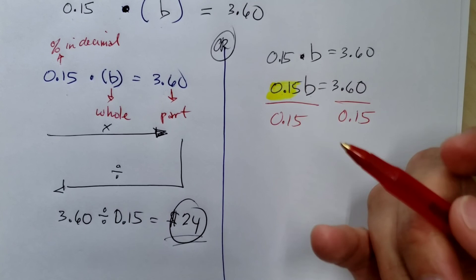So let's divide that, and that's going to be B is equal to 24. So it will be the same thing.